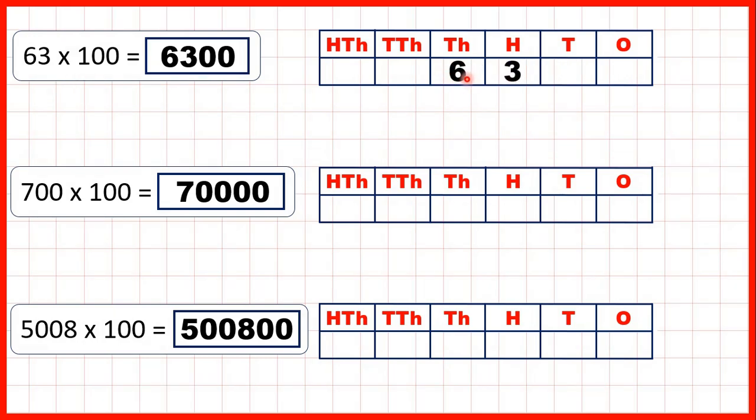But to make it clear that the 6 is now in our 1000s and the 3 in our 100s, we need to write zeros in our empty place value columns for our 10s and 1s.